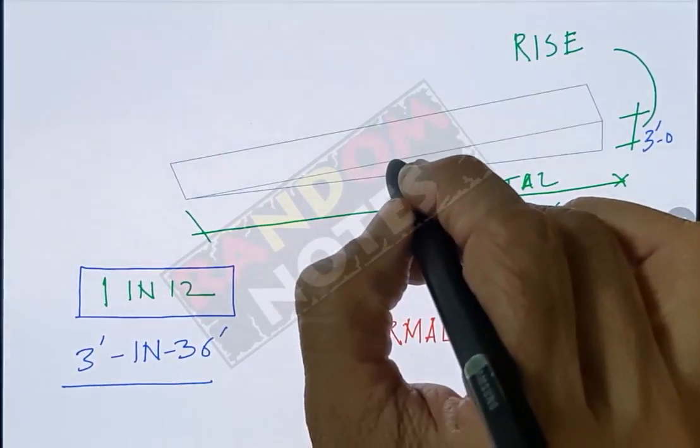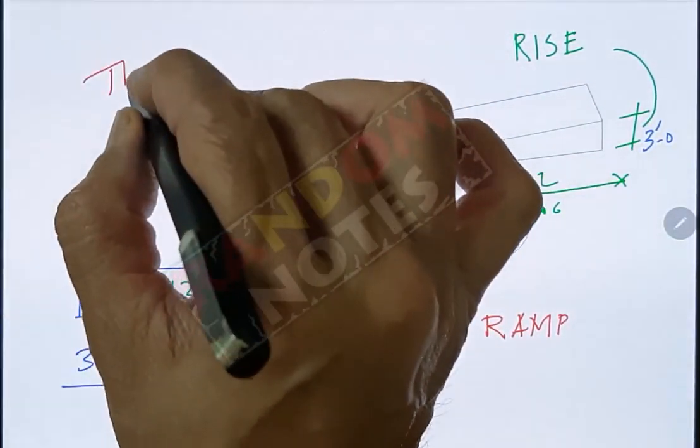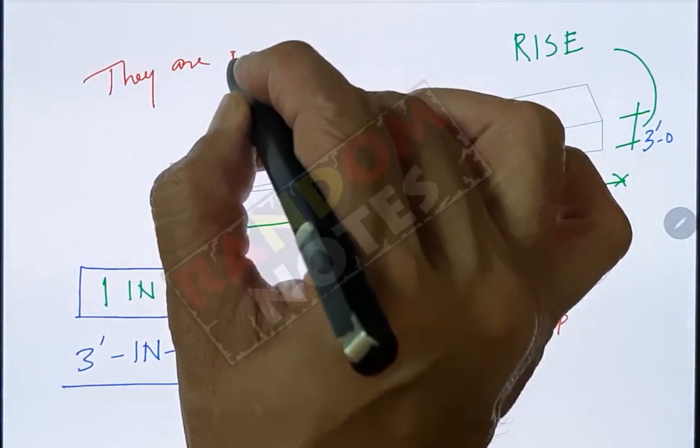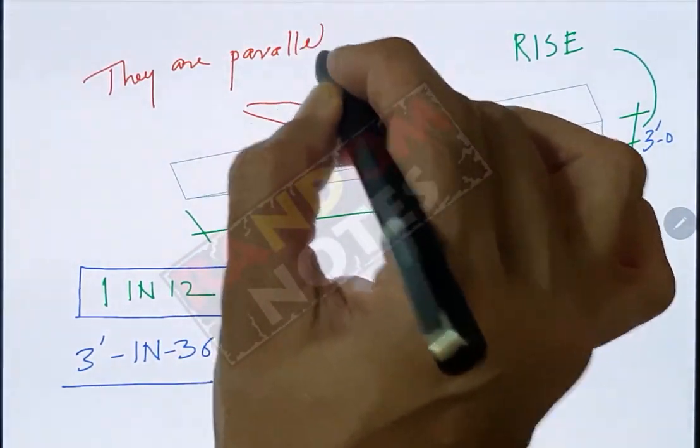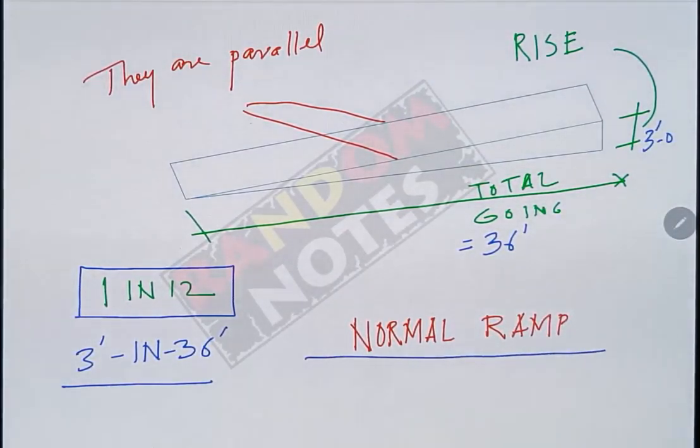In ramps generally the two edges are always parallel. But in a normal straight ramp they are also equal in length. This results in a plain face for this ramp which is sloping uniformly from top to bottom.